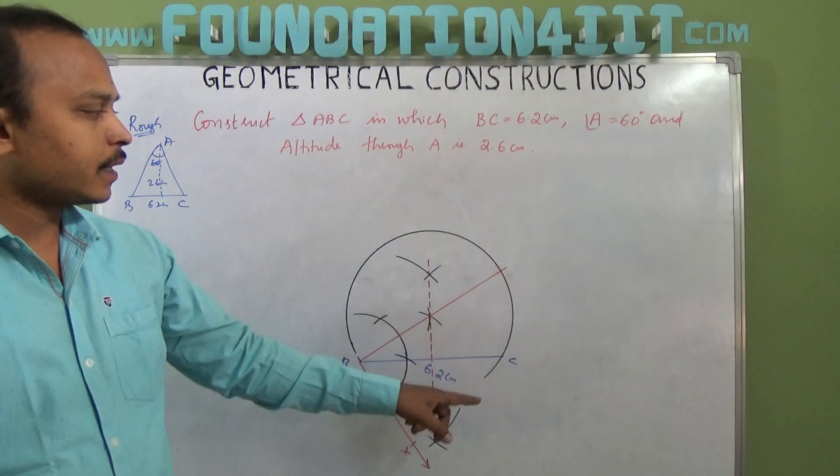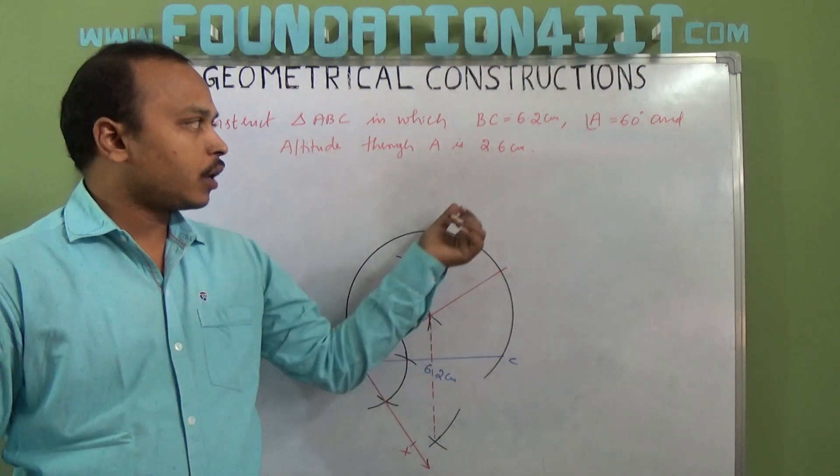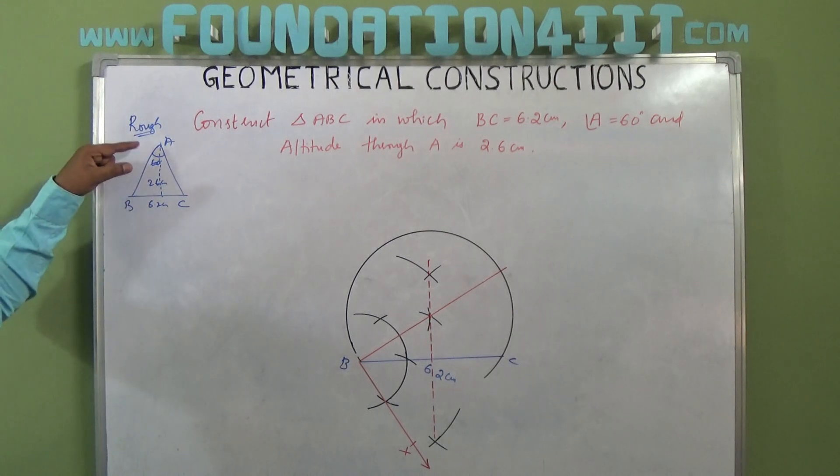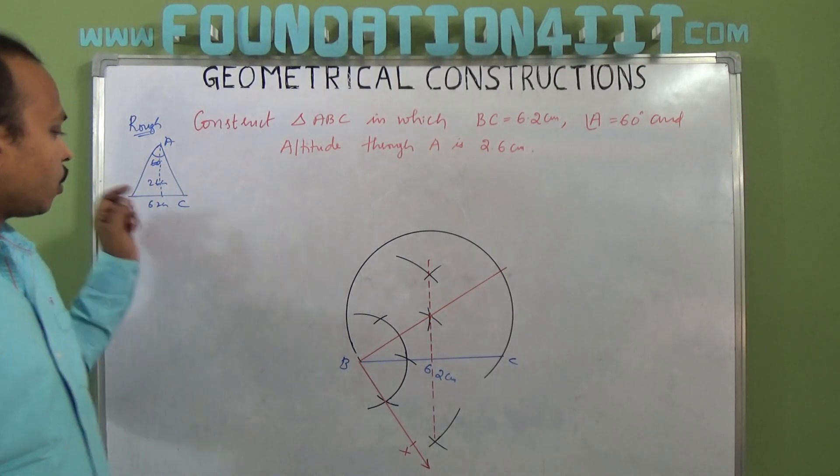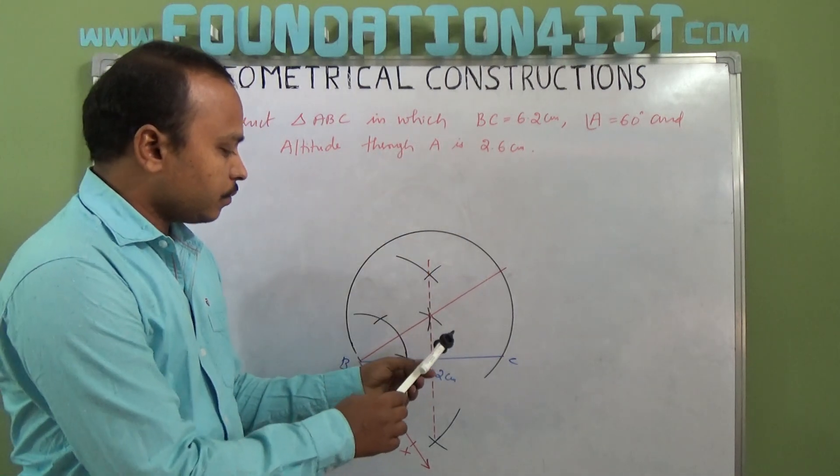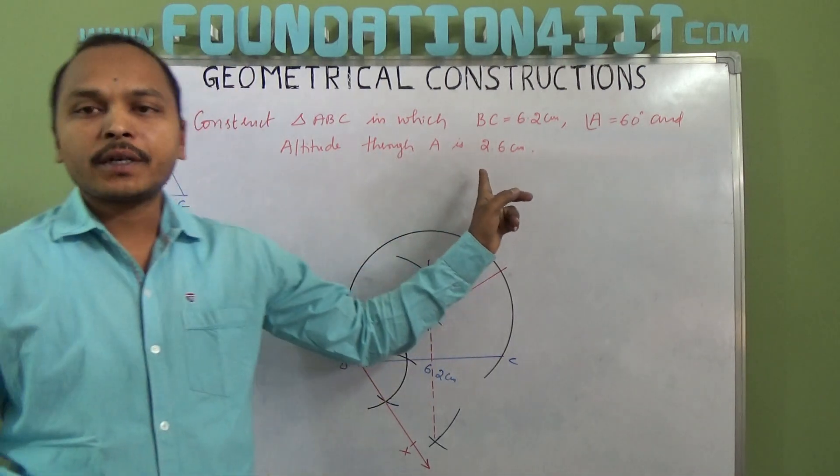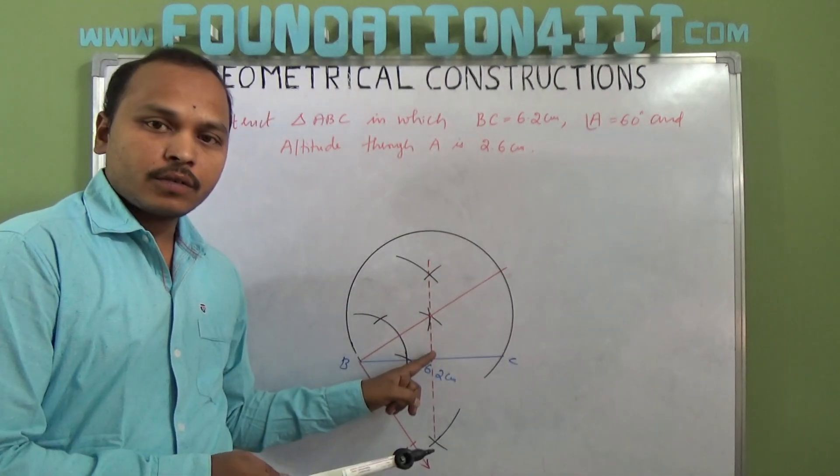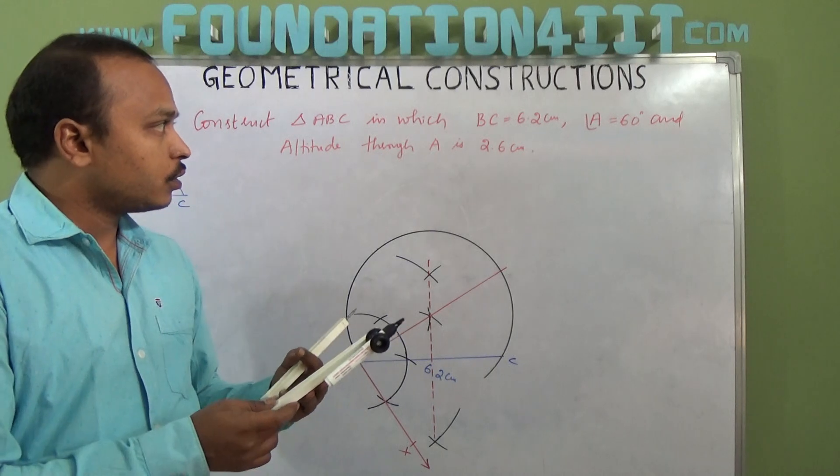Point A lies on this line segment, on this circle. The angle at A is 60 degrees. Now we know altitude is always perpendicular. The altitude from A is 2.6 centimeters. After drawing the circle, from this perpendicular line, mark the altitude which is 2.6 centimeters.